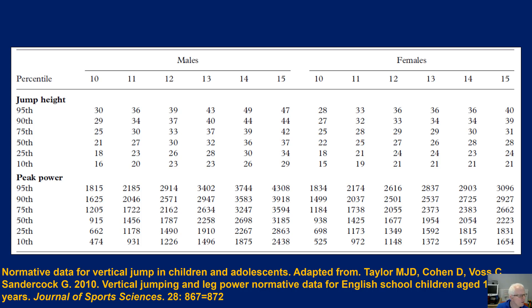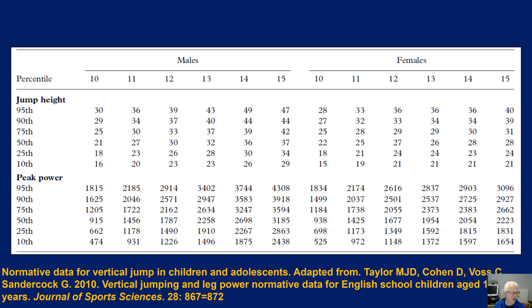For younger population groups, normative data is also available including estimated power values using something like the Sayers formula. The 50th percentile for young males is anywhere between 21 to 37 centimetres, and for young females 22 to 28 centimetres. At the 95th percentile — the top five percent — vertical jump heights are much higher, and therefore estimated powers are also considerably higher.